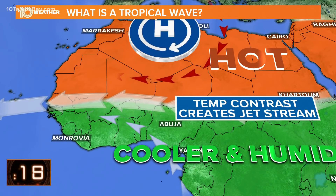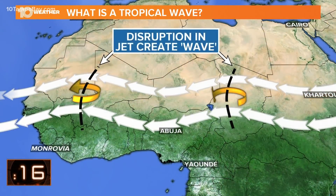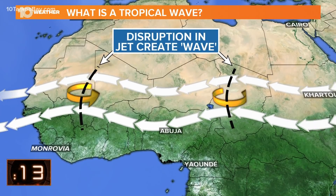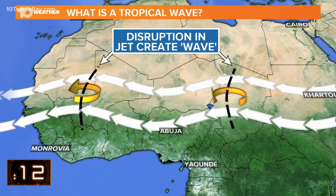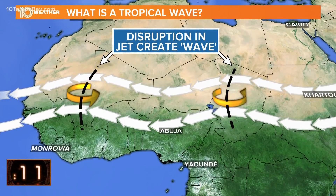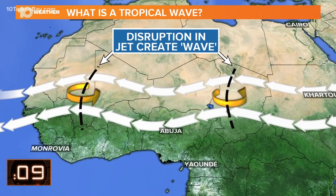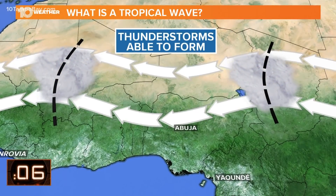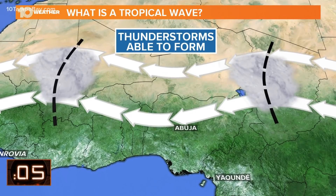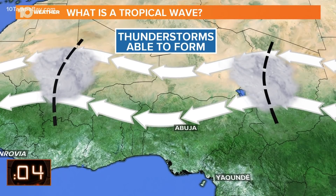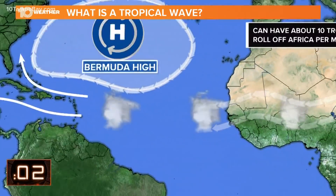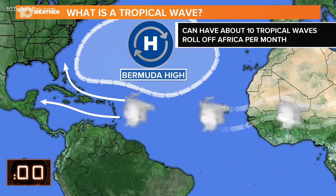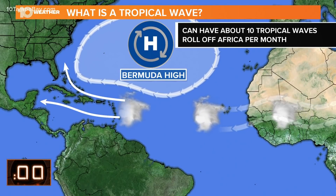That jet stream moves across the African continent, and within that jet you get these little perturbations — little disruptions in the flow. That's where you get thunderstorm activity developing, and that's where you get a little bit of spin in the atmosphere.